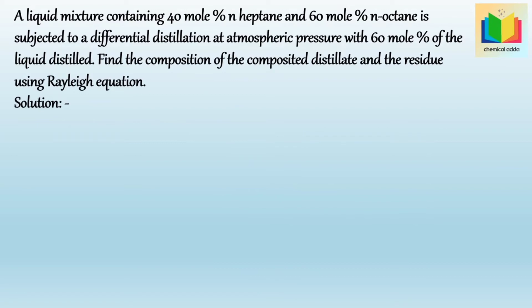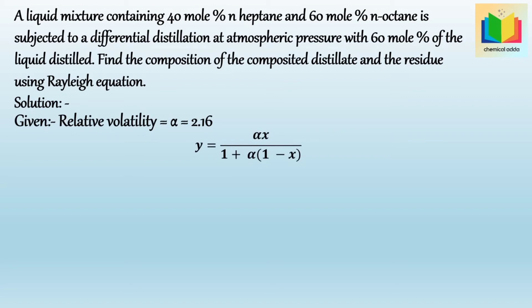In this problem, equilibrium data is not given directly. However, the relative volatility α = 2.16 is given. To calculate the equilibrium data, we use the relative volatility formula: Y = (α·X) / (1 + α·(1 - X)). By putting in values of X, the corresponding values of Y can be calculated.